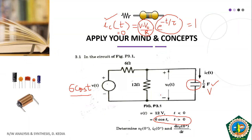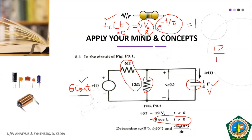The capacitor is treated as a circuit element in parallel with the 12 ohm resistance, so the voltage across the capacitor equals the voltage across that resistance. Applying the voltage divider rule, the voltage across 12 ohm is 12 divided by (12 plus 6), that is 18, multiplied by 6 cos T. This comes out to be 4 cos T. So the value of V, the applied voltage across the capacitor, is 4 cos T.